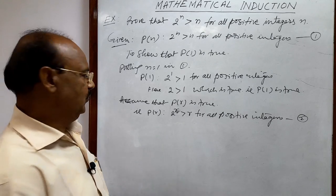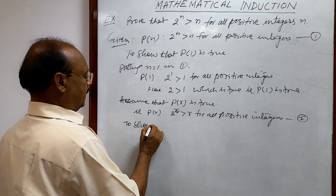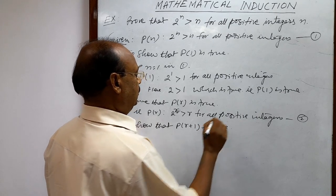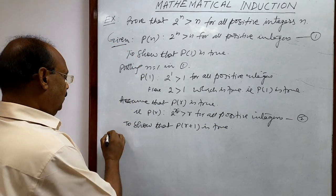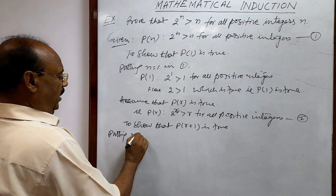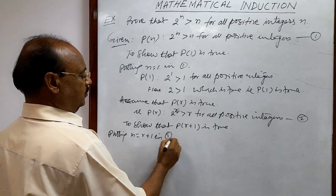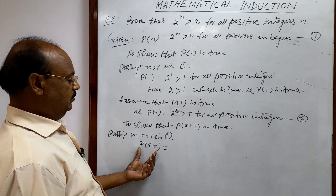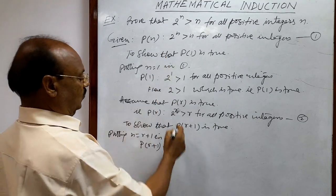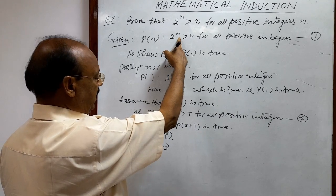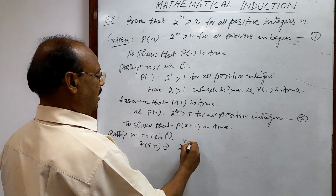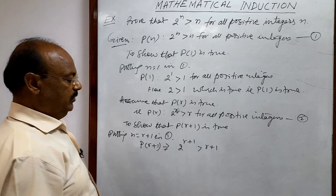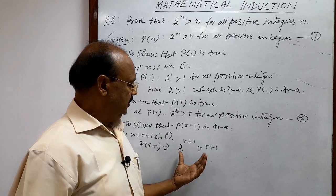Third and final step: we have to show that P(r+1) is true. Putting n equal to r plus 1 in relation number 1, we get P(r+1): 2 to the power r plus 1 is greater than r plus 1. We have to establish that this statement holds for all positive integers n.